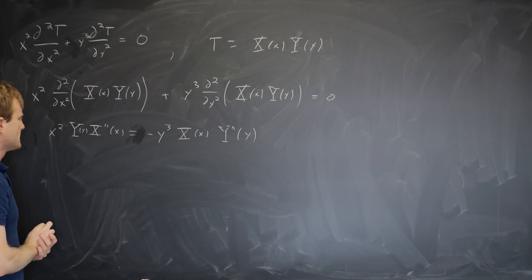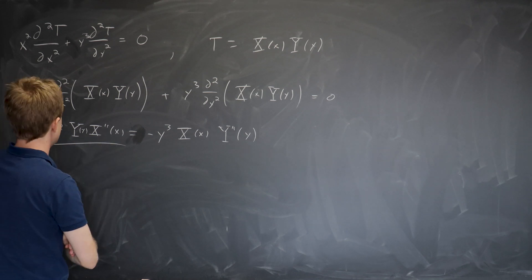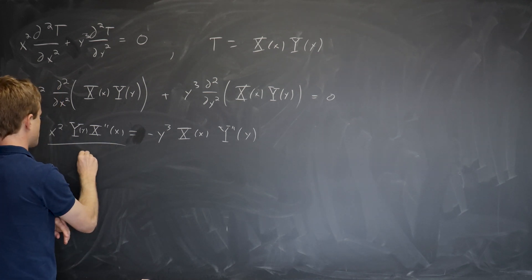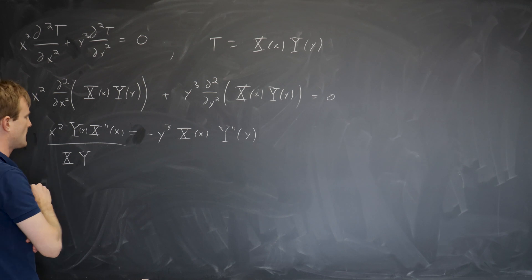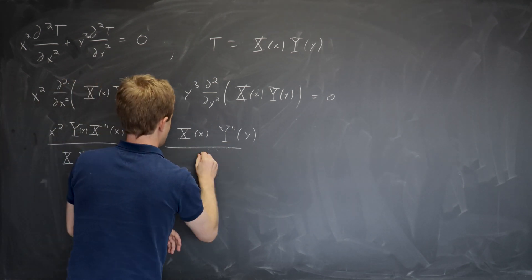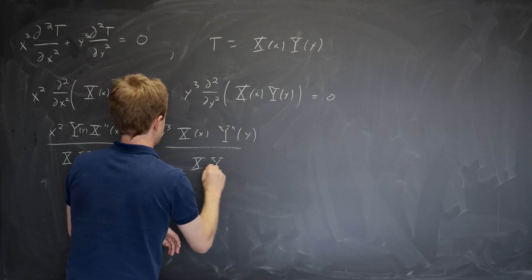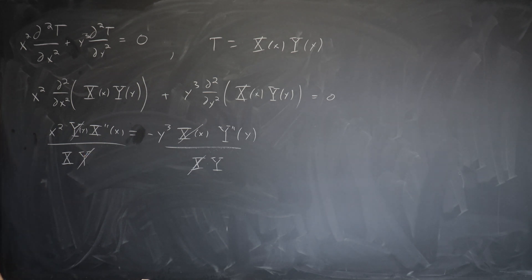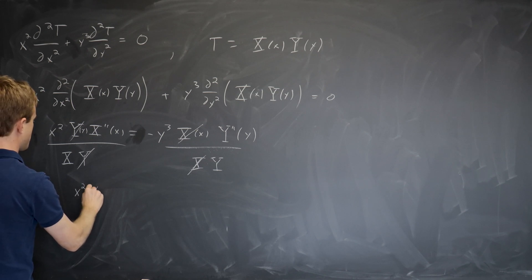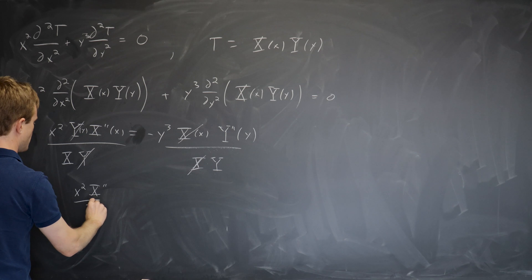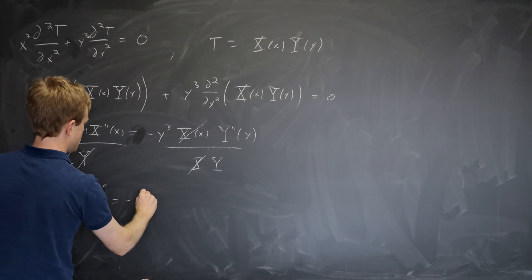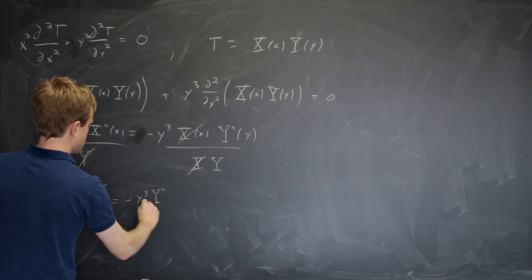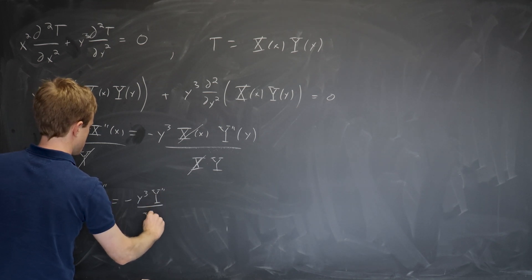But how are we going to isolate one side all x and one side all y? Well, I can play the same trick I played last time. If I divide by x times y, then what's going to get canceled on the right is the x and on the left is the y. And so looks like it works. I just have x squared capital X double prime over x equals minus y cubed capital Y double prime over y.